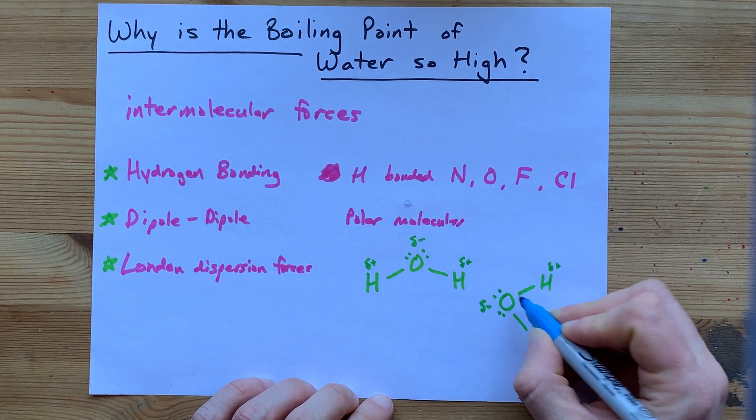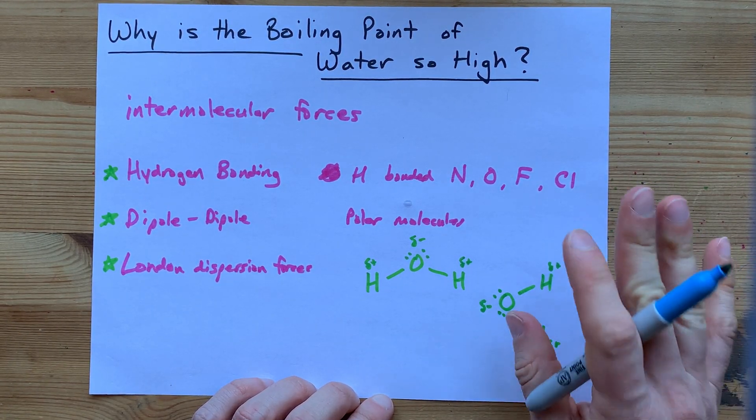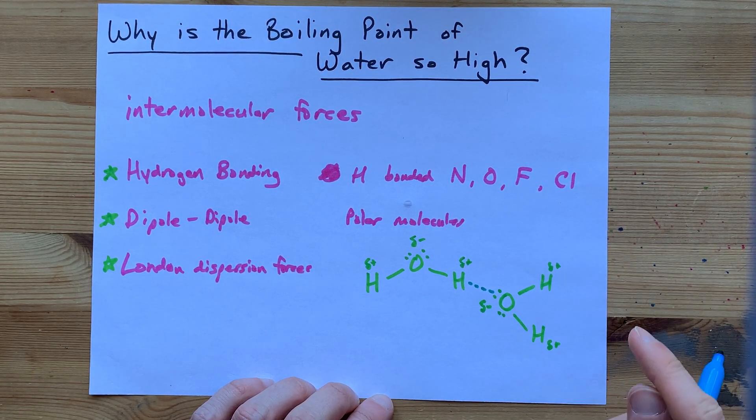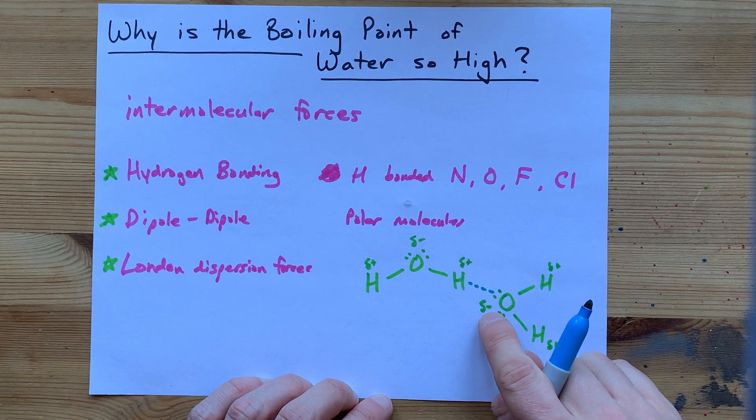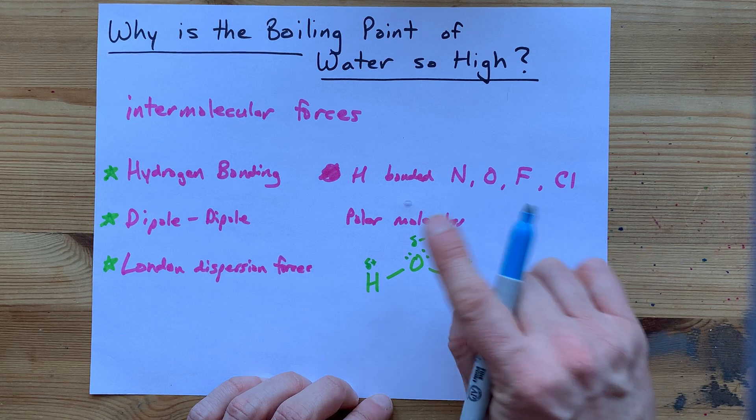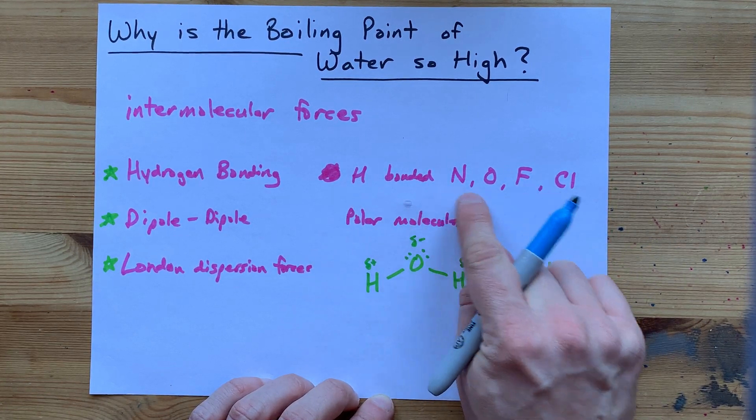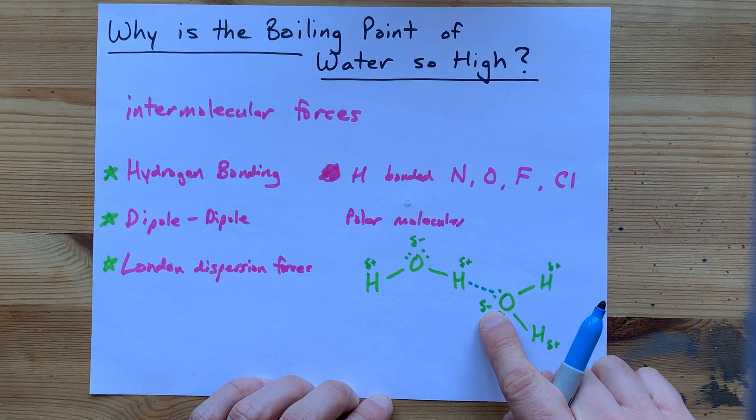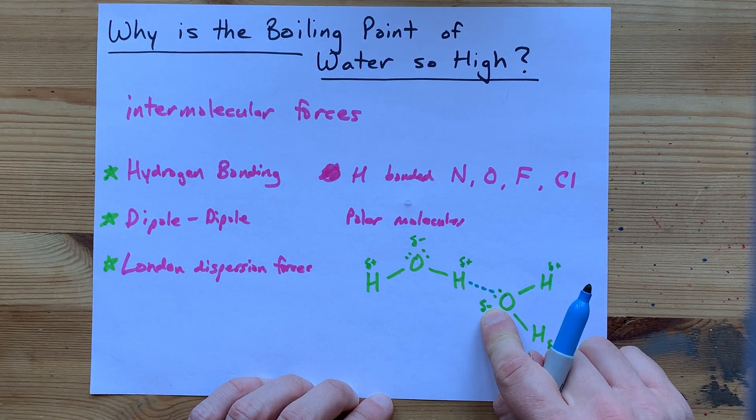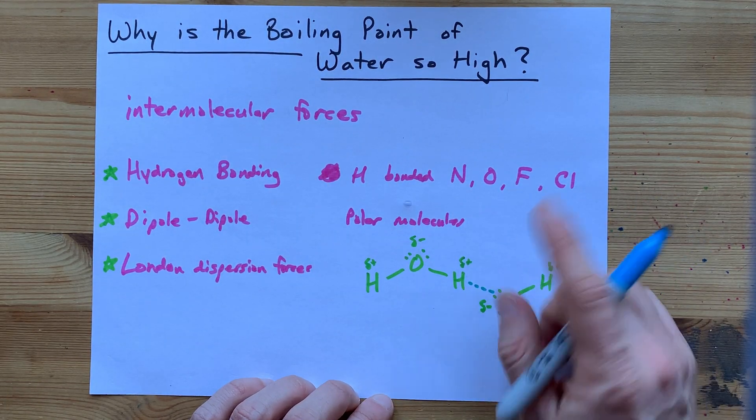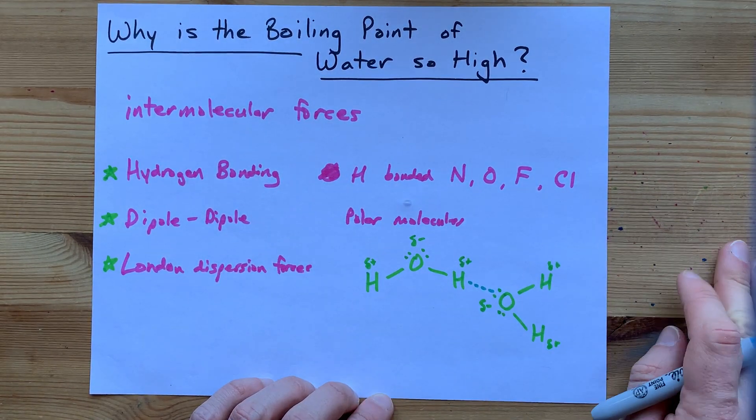The green solid lines here are covalent bonds that hold the molecule together. This dotted line that I'm showing you is an attraction between the delta minus oxygen and the delta plus hydrogen. When it's hydrogen bonded to N or O or F and sometimes Cl, this delta attraction is so strong, we end up calling it hydrogen bonding. It's really just like dipole-dipole forces on steroids.